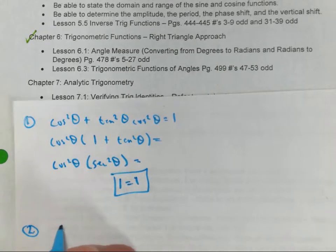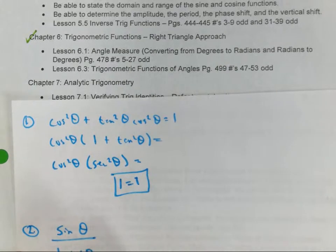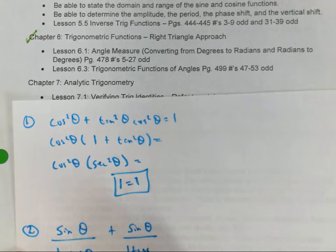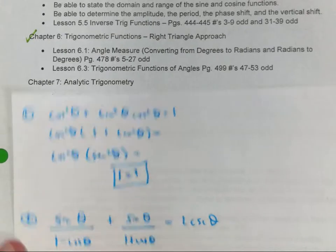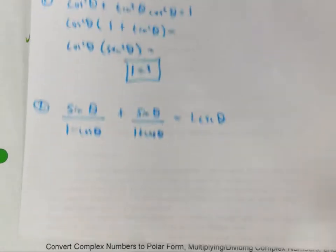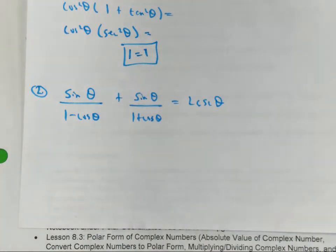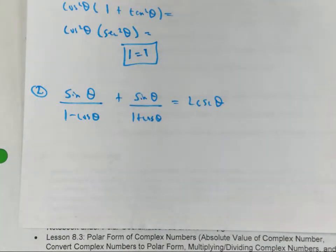Number 2, let's prove this one. Sine theta over 1 minus cosine theta plus sine theta over 1 plus cosine theta equals 2 cosecant theta. The one on the left looks more complicated, so I'm going to work on that side. What do you think we would have to do with that?